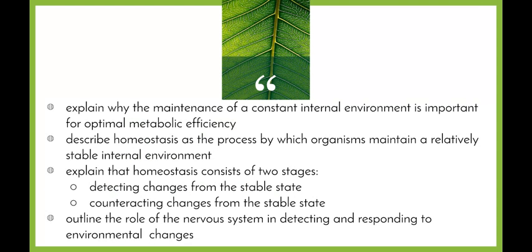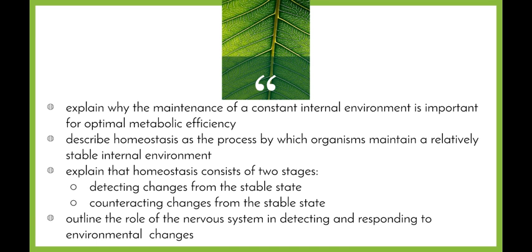We're going to start off by having a look at four dot points: explain why the maintenance of a constant internal environment is important for optimal metabolic efficiency; describe homeostasis as the process by which organisms maintain a relatively stable internal environment; explain that homeostasis consists of two stages — detecting changes from the stable state and counteracting changes from the stable state; and outline the role of the nervous system in detecting and responding to environmental changes.